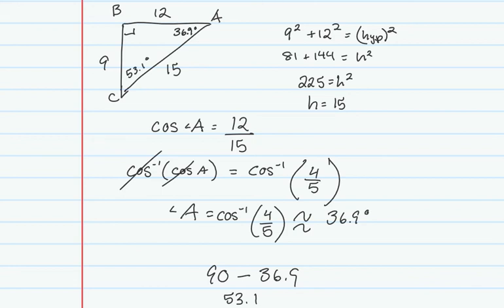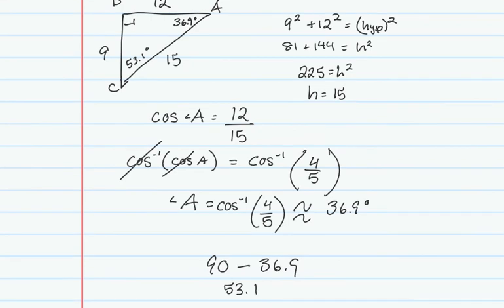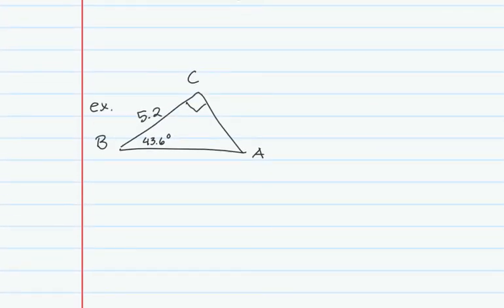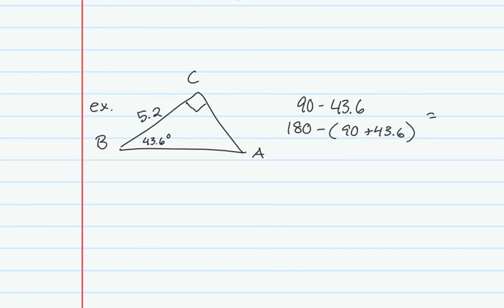The whole goal of solving a right triangle is to find all six pieces of information — three angles and three sides. In the next example, starting with one side and one angle, I can find angle A immediately by doing 90 minus 43.6, or 180 minus (90 plus 43.6). Either gives the correct answer: 46.4 degrees.